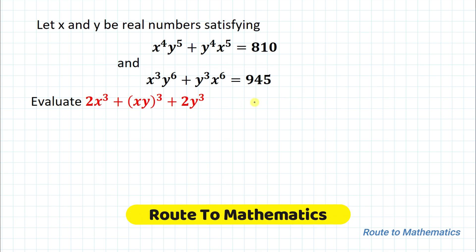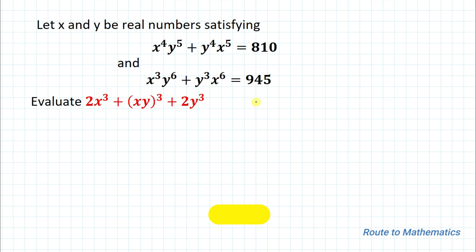Hello everyone, welcome to Root 2 Mathematics. In this video we're going to solve an interesting olympiad question. The given question is: let x and y be real numbers satisfying x⁴y⁵ + y⁴x⁵ = 810, and the second equation is x³y⁶ + y³x⁶ = 945. Then evaluate the value of 2x³ + (xy)³ + 2y³.